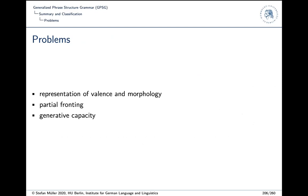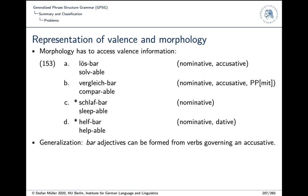So that's it for GPSG. Before closing this session, I want to discuss some problems. The first problem is the representation of valence with these numbers and morphology. Then there are problems with partial fronting, and there is a formal problem with the generative capacity of GPSG.